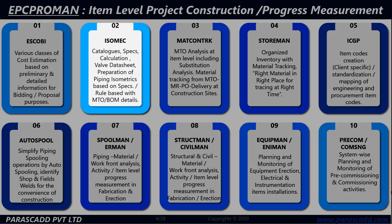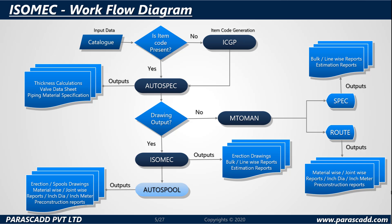One can also purchase and use individual modules like ISO-MEC without buying the complete EPC-Promance. As shown by the diagram below, a strict workflow has been established, incorporating the use of the software's ICGP, Autospec, MTO-MAN, and ISO-MEC, all of which we will be looking at today. We will also observe the relationship between these softwares and Autospool.